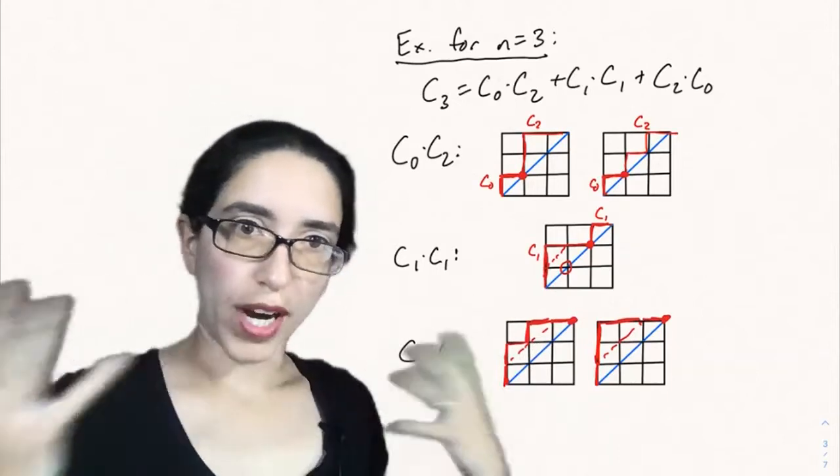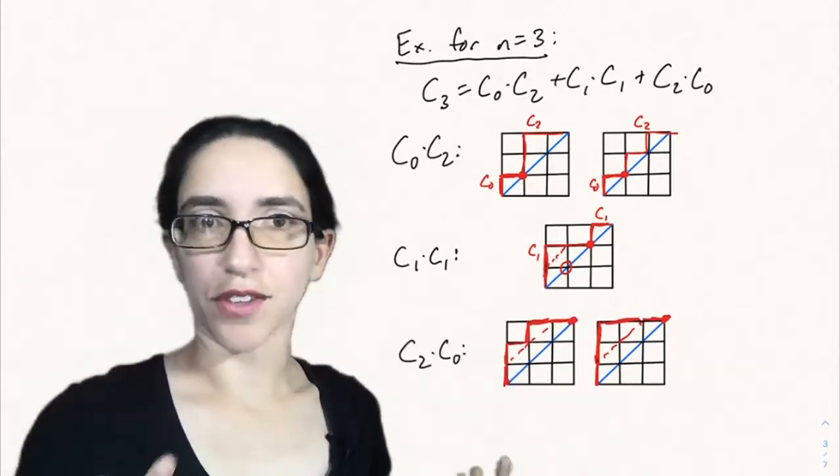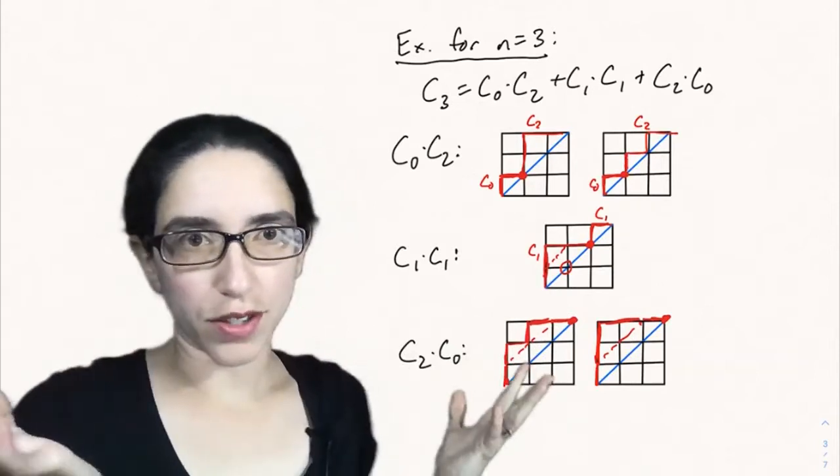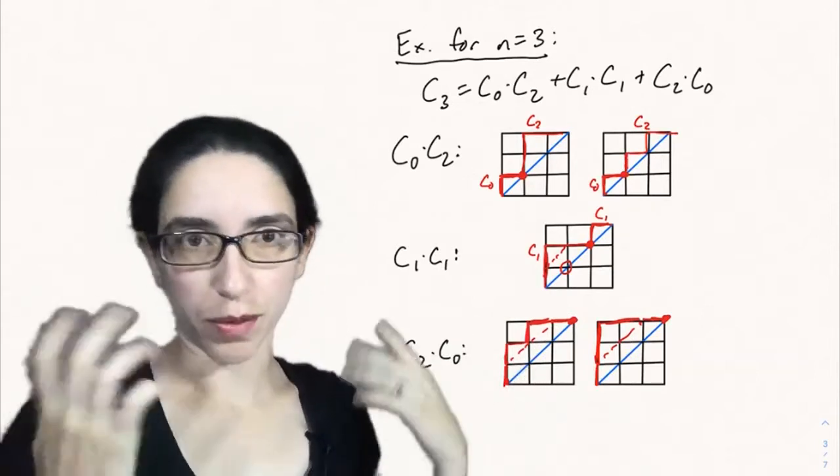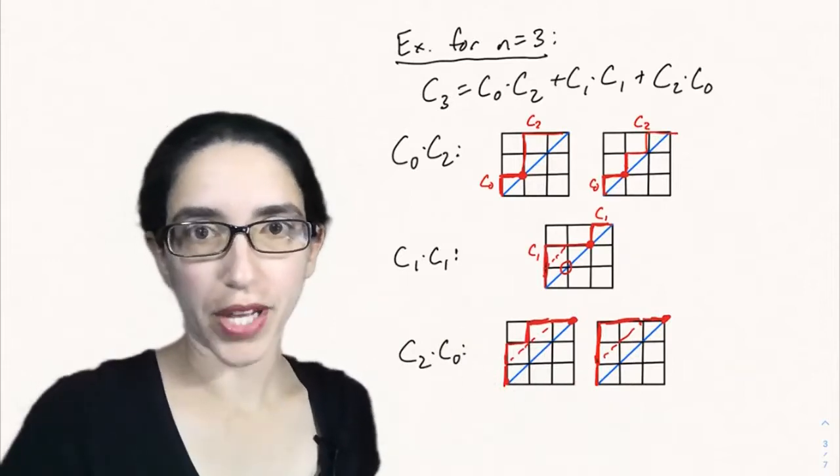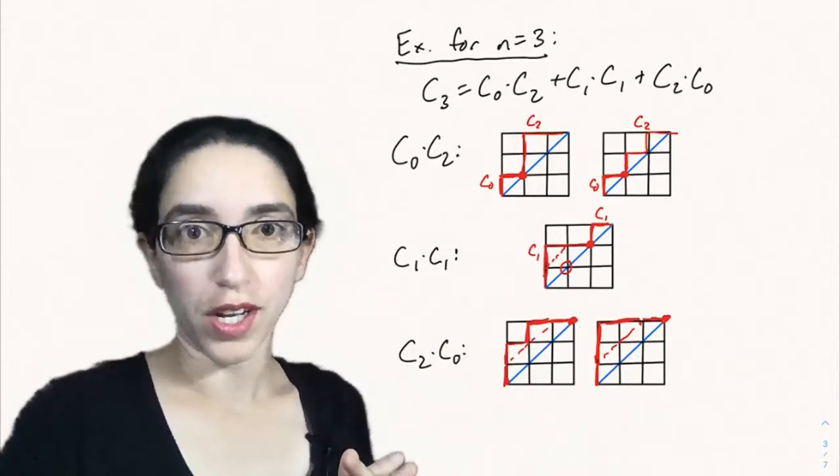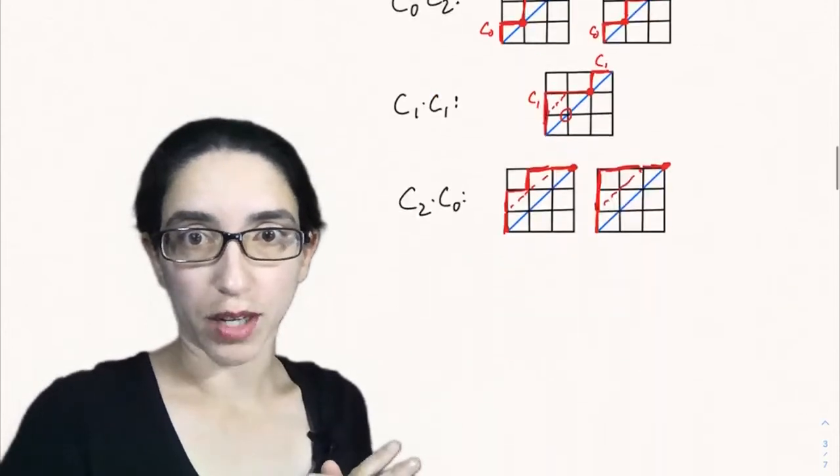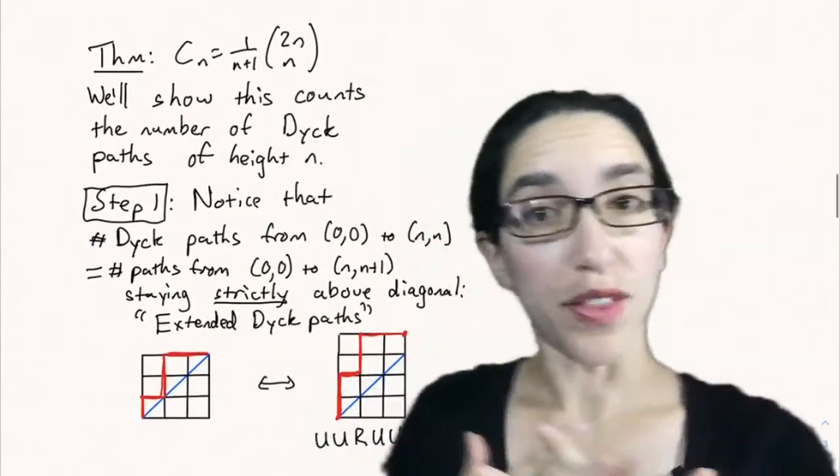So there's a visual of why Dyck paths satisfy this Catalan recurrence. And then the question is, do they have an explicit formula? Can we count them in some way? Can we solve this recursion? That's actually quite difficult to do in the realm of Catalan numbers. But it turns out there is a formula.